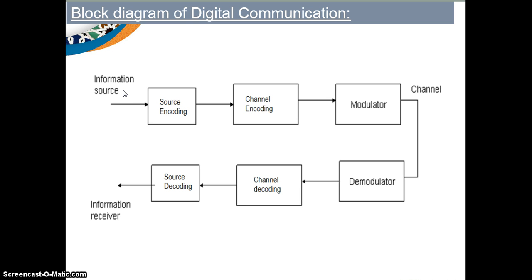In the real world, everything is continuous in nature. So whatever information comes from the information source is continuous in nature. But in digital communication, we need to convert that continuous information to digital. The process of converting an analog or continuous-time signal to a discrete signal is called sampling. We will study sampling and the sampling theorem in detail in this unit.